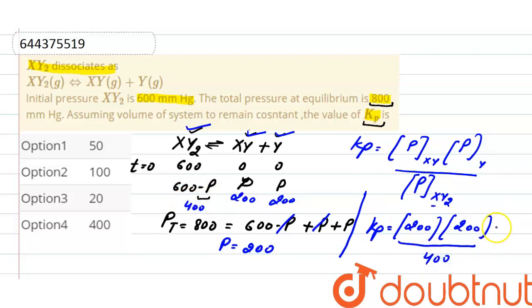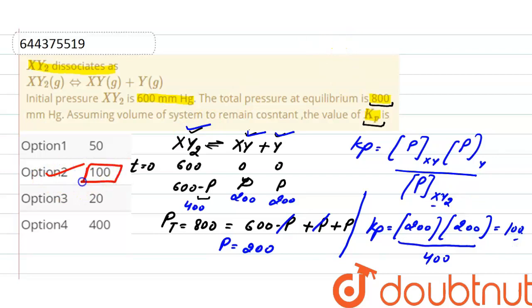After solving, the value of Kp at equilibrium is 100. So the correct option here is option 2, in which the value of Kp is 100.